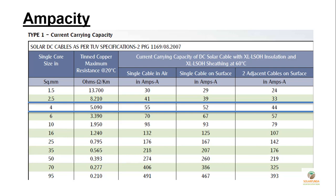The resistance of the cable is also given, which is used for calculating voltage drop and losses in the cable. You can find ampacity specifications like this in both DC and AC cables, and it varies with every type of cable.